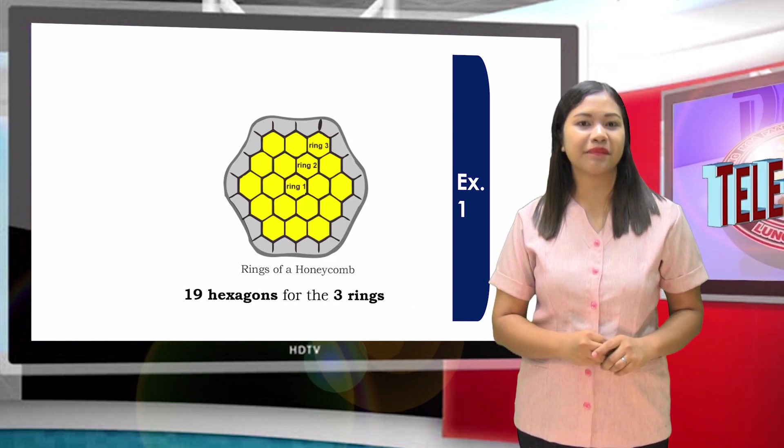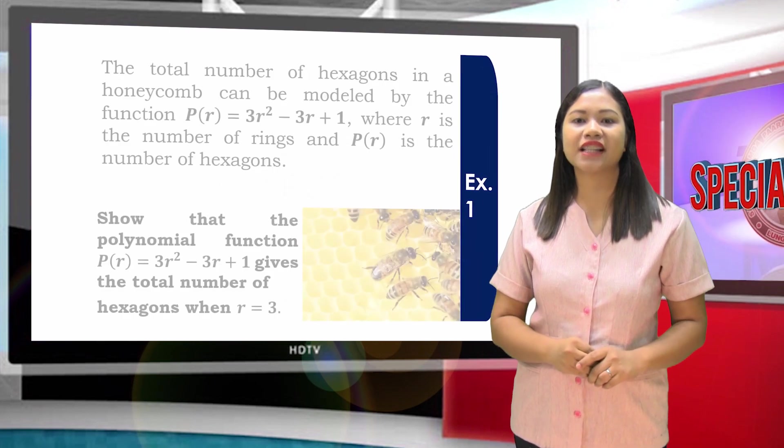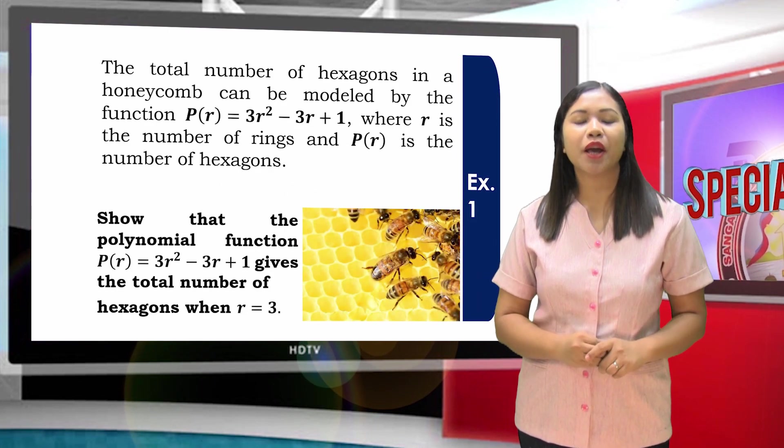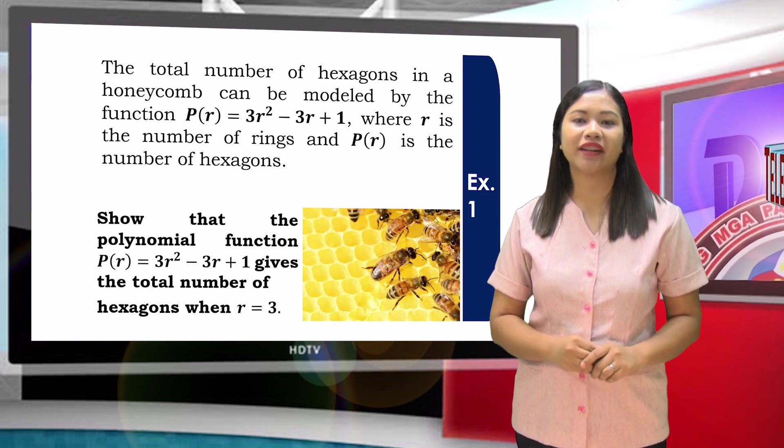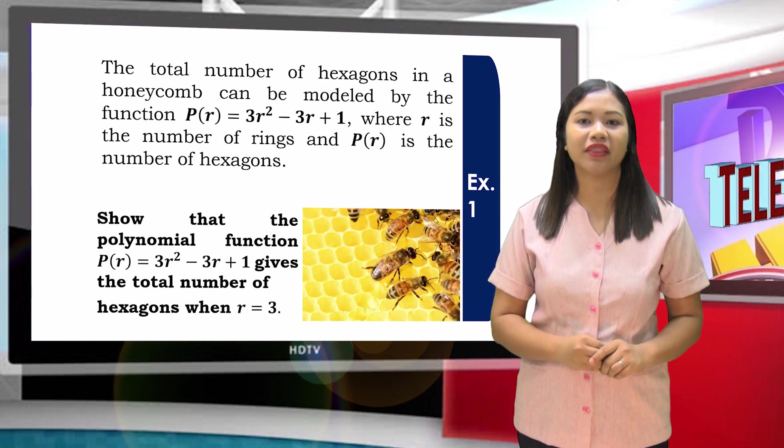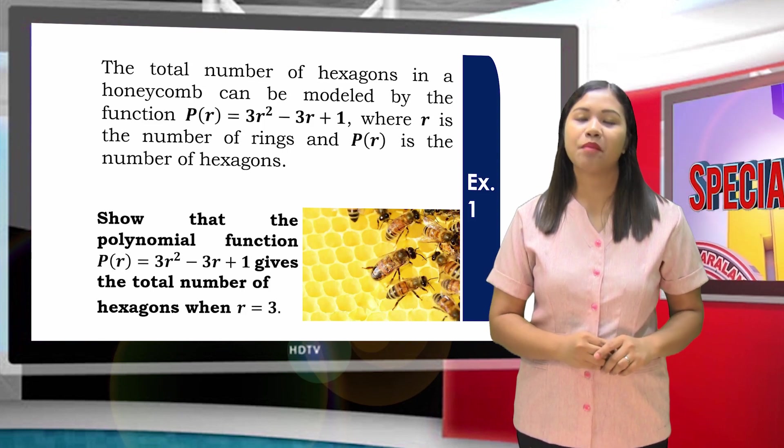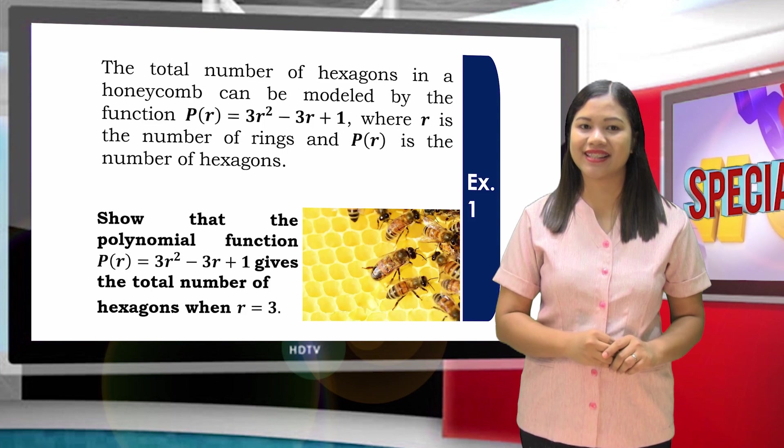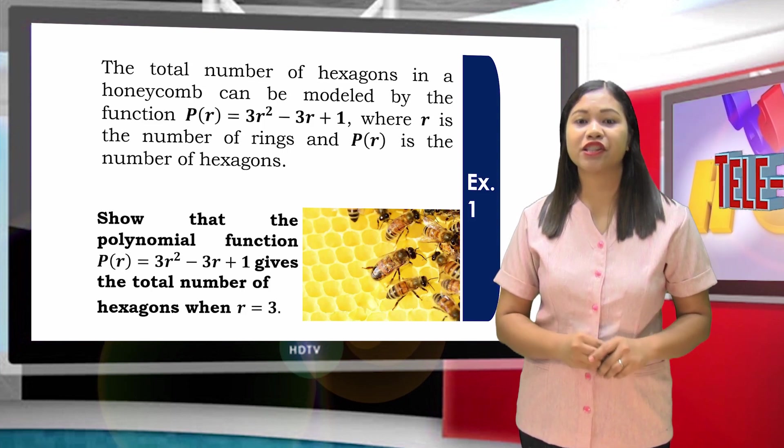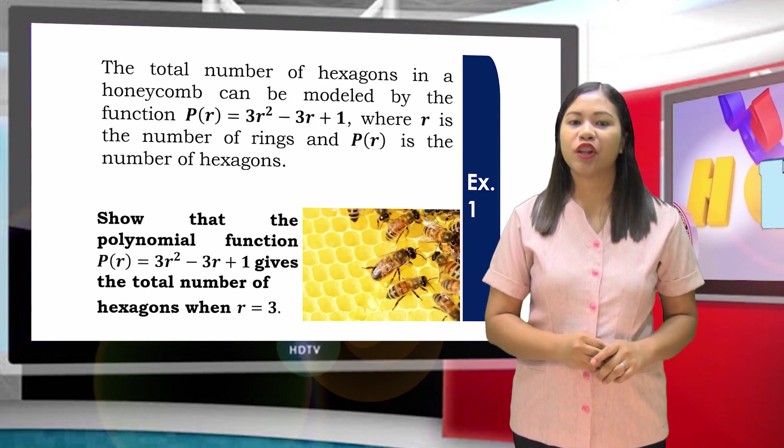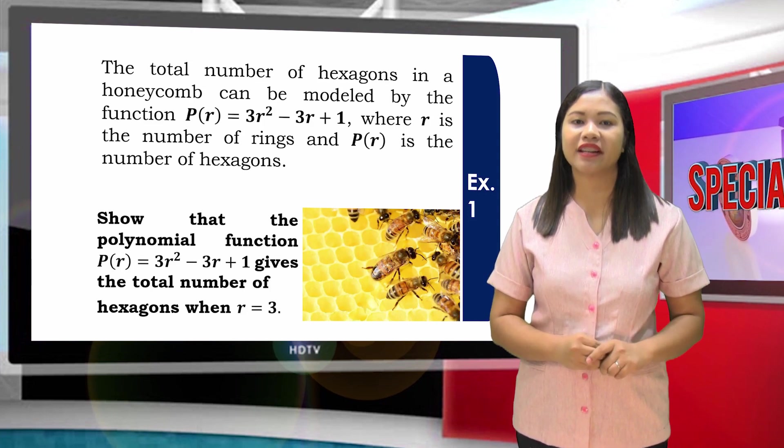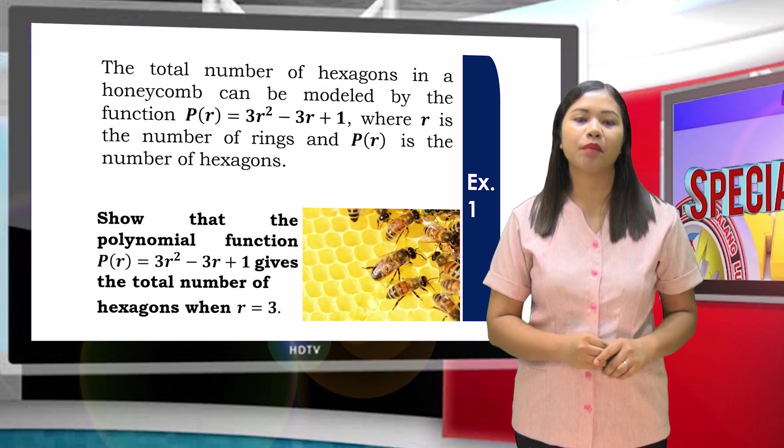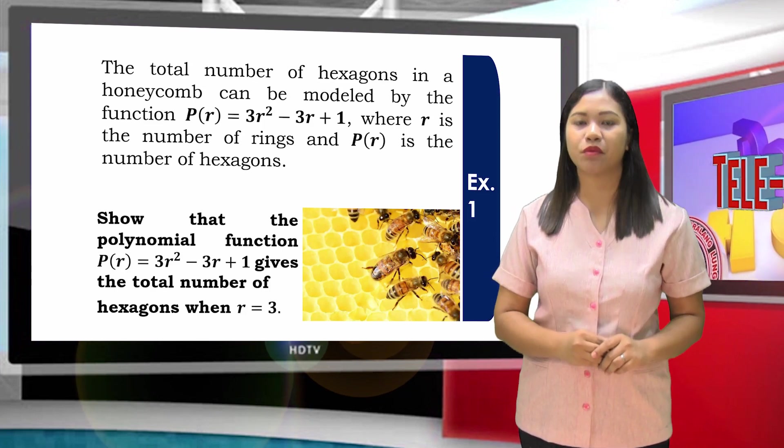Now listen carefully. The total number of hexagons in a honeycomb can be modeled by the function P(R) = 3R² - 3R + 1, where R is the number of rings and P(R) is the number of hexagons. Our task is to show that the polynomial function P(R) = 3R² - 3R + 1 gets the total number of hexagons when R = 3.